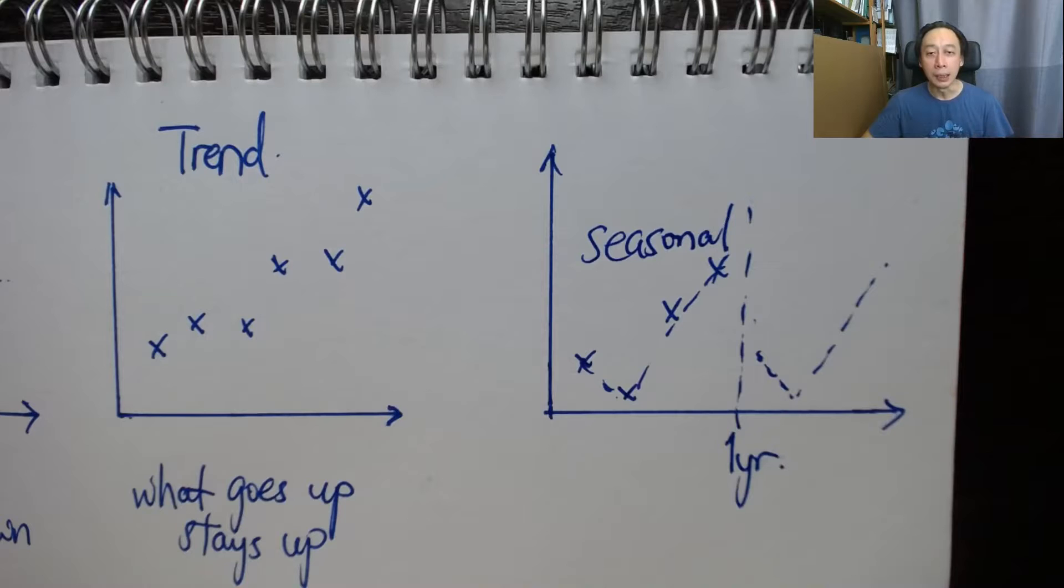For example, financial year kind of repetitions, that's seasonal pattern. If you're talking about economy or real estate property cycles and the stock market boom and crash, so all these will take sometimes five years, 10 years, 15 years.